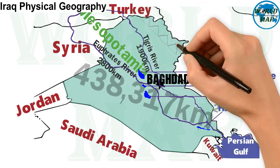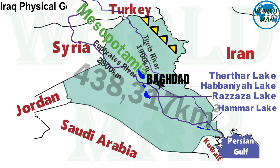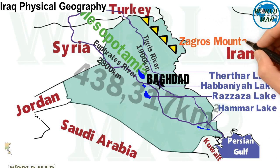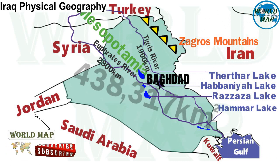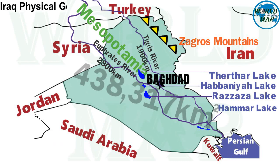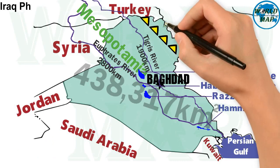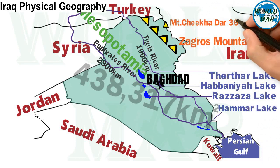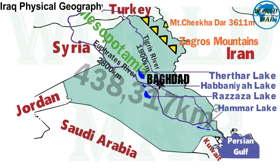Famous mountains and mountain ranges of Iraq: The Zagros mountains are a long mountain range spanning Iran, northern Iraq, and southeastern Turkey, with a total length of 1,600 kilometers (990 miles). Chika Dar, meaning 'black tent,' is the local Kurdish name for the mountain located in the Kurdistan region of Iraq, currently thought to be the highest in Iraq, claimed to be 3,611 meters high according to the CIA World Factbook.